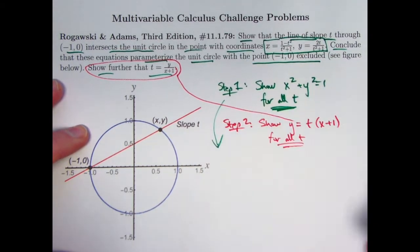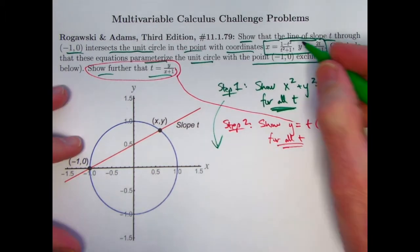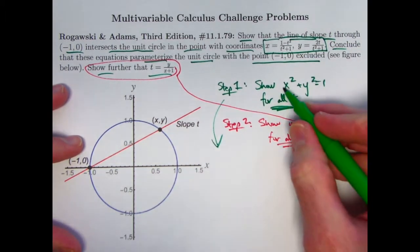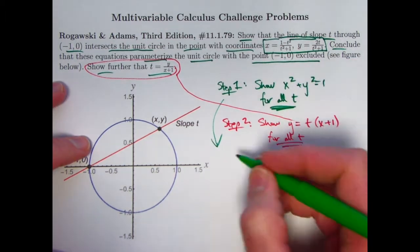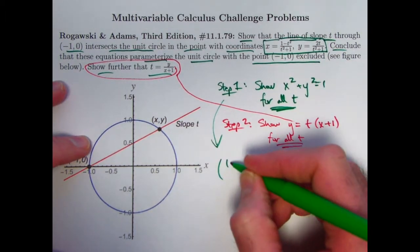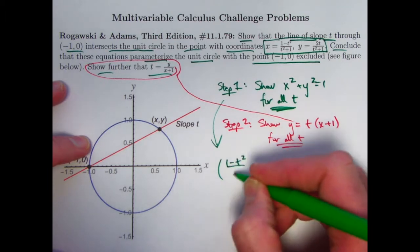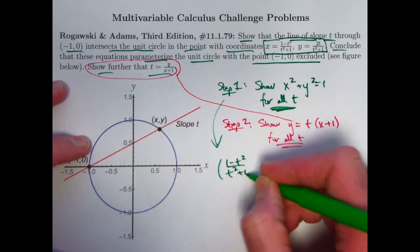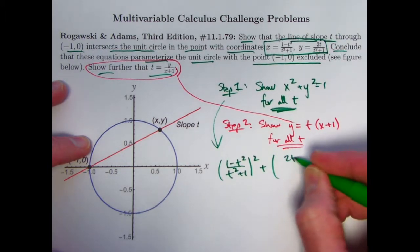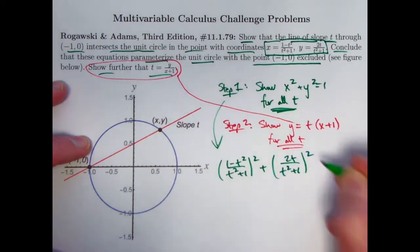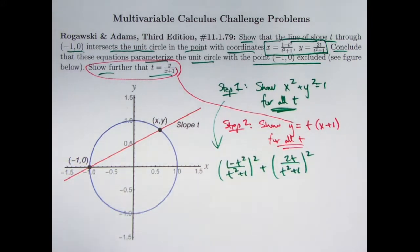And in fact, step two automatically verifies t = y/(x+1), because you can just divide both sides by x+1, assuming x is not -1, like we would be ultimately seeing. Once again, show this is true also for all t, no matter what t is. So let's do the first one now. Step one, it's just a matter of plugging and chugging. Take these equations, plug them in for x and y, and simplify. So I've got to take x and square it. The equation for x is (1-t²)/(t²+1). I've got to square that. Add y². Take 2t/(t²+1) and square that.